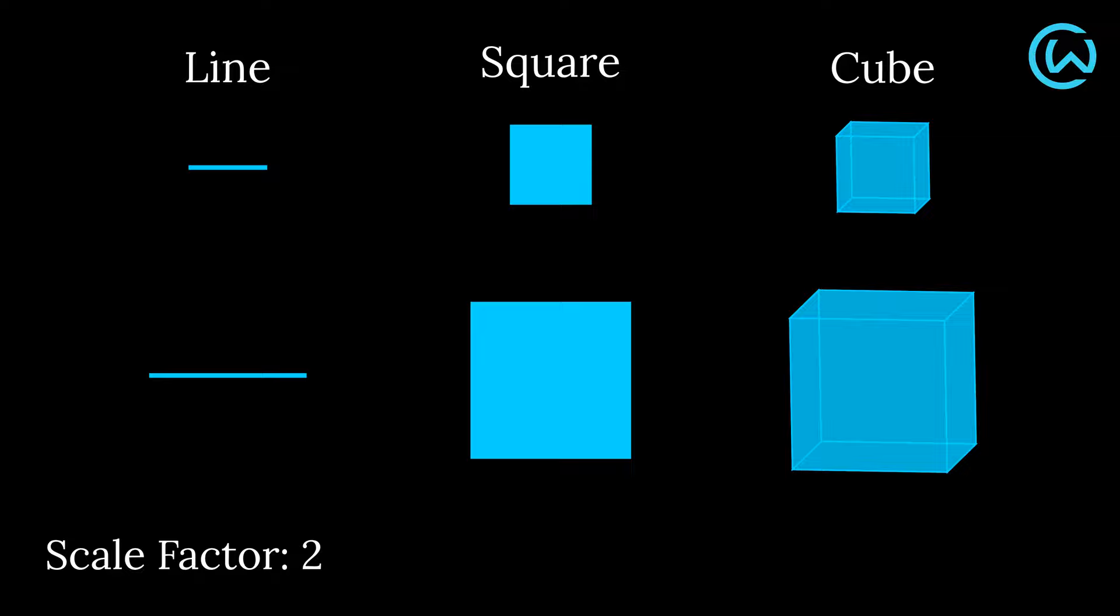All of these scaled shapes consist of unscaled copies of themselves. The line consists of two unscaled copies of itself, the square consists of four unscaled copies, and the cube consists of eight unscaled copies.